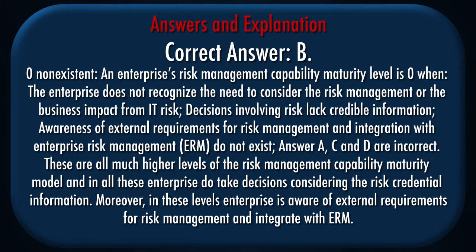Correct answer: B. Explanation: Level 0 — Non-existent. An enterprise's risk management capability maturity level is 0 when the enterprise does not recognize the need to consider risk management or the business impact from IT risk. Decisions involving risk lack credible information. Awareness of external requirements for risk management and integration with enterprise risk management (ERM) do not exist. Answers A, C, and D are incorrect — these are much higher levels of the risk management capability maturity model, and in all these levels enterprises do take decisions considering risk credential information and are aware of external requirements for risk management and integrate with ERM.